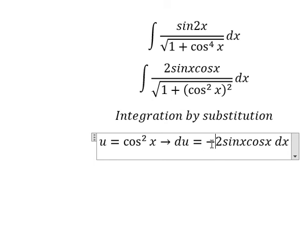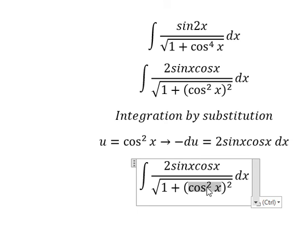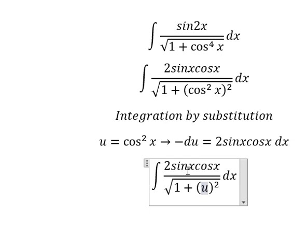we divide both sides by -1. So 2 sin x cos x dx becomes -du, and we substitute u into the integral.